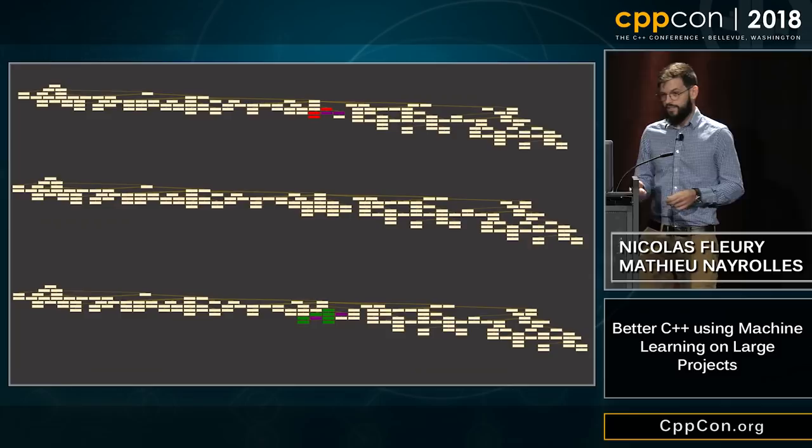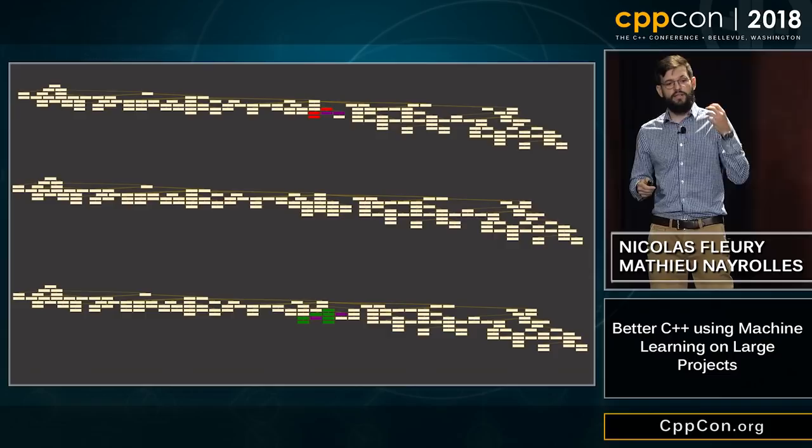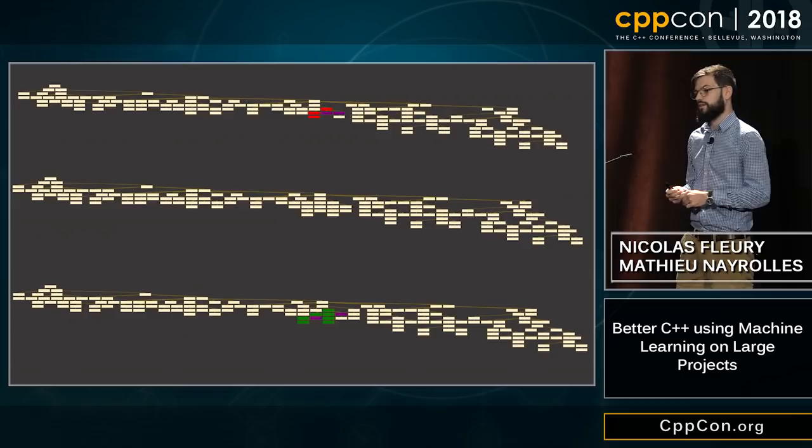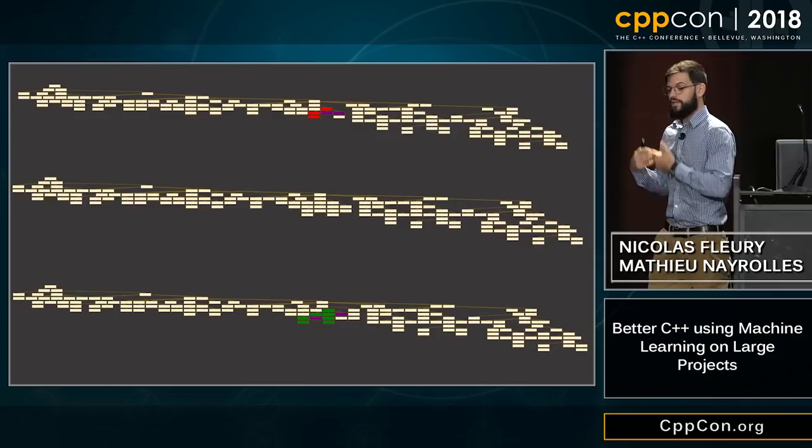We don't compare code as text — we do it with abstract syntax trees. On the top you have the abstract syntax tree of the buggy double-for bubble sort, in the middle the while-based fixed bubble sort, and in the end the fix of the while-based bubble sort merged into the double-for-based bubble sort.